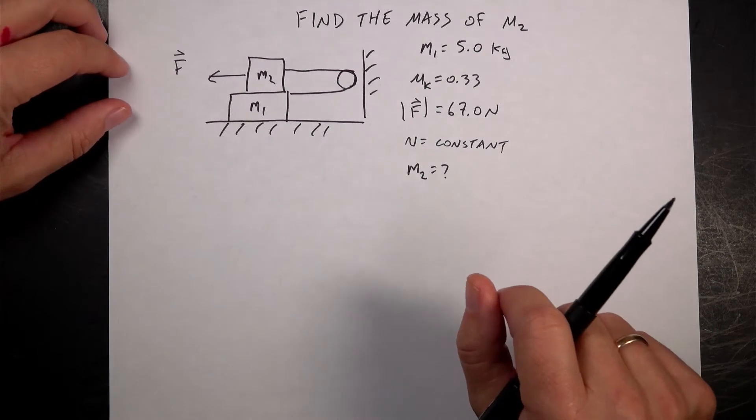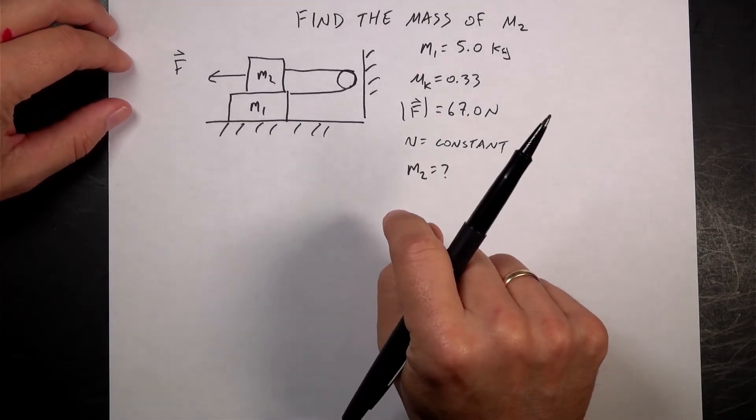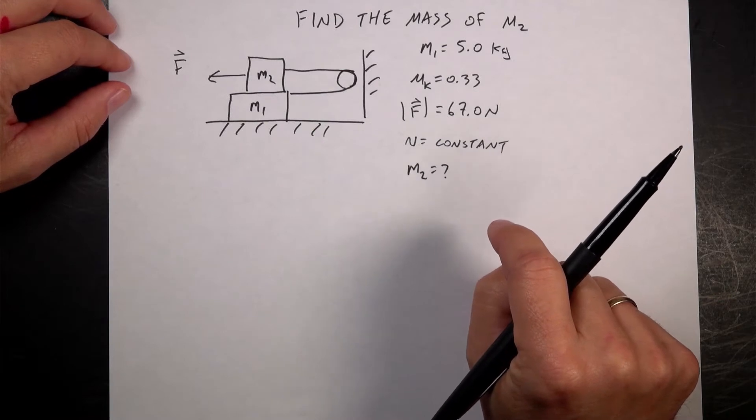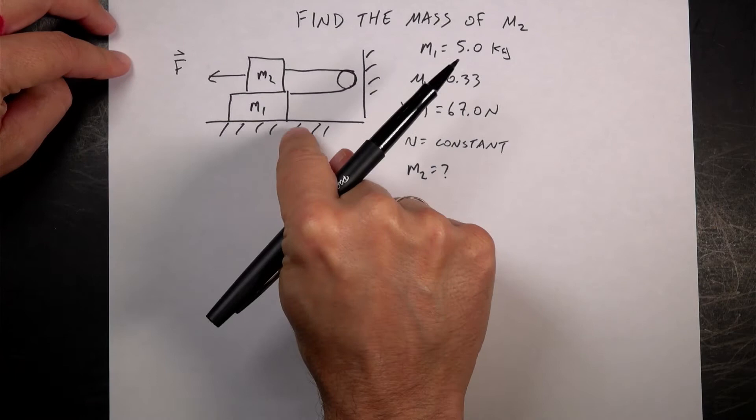So let's look at this particular question. I'll read the question. A block of mass m rests on a block of mass m1 equals 5 kilograms which is on the tabletop, see figure below. That figure.